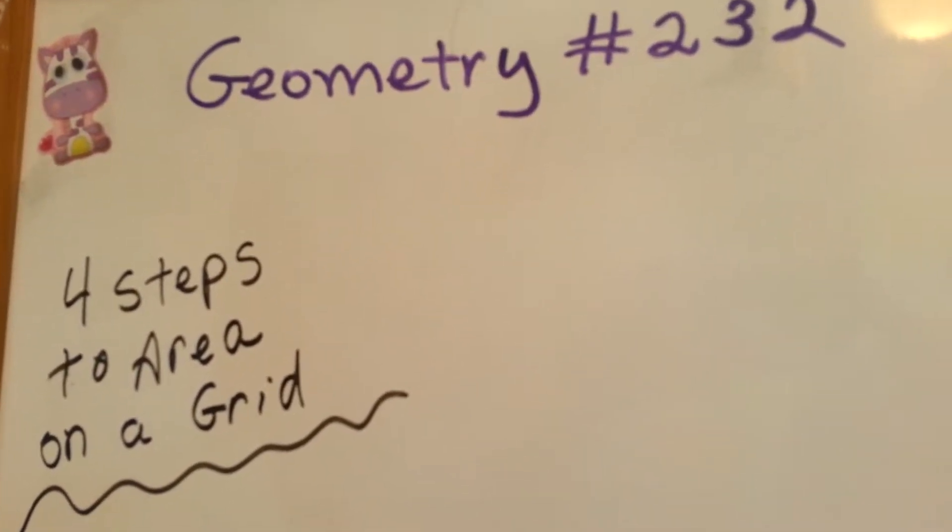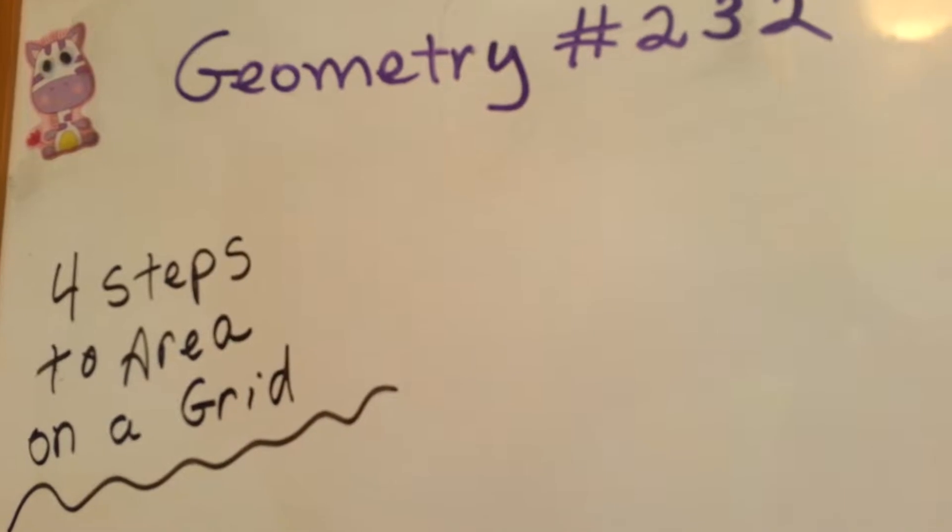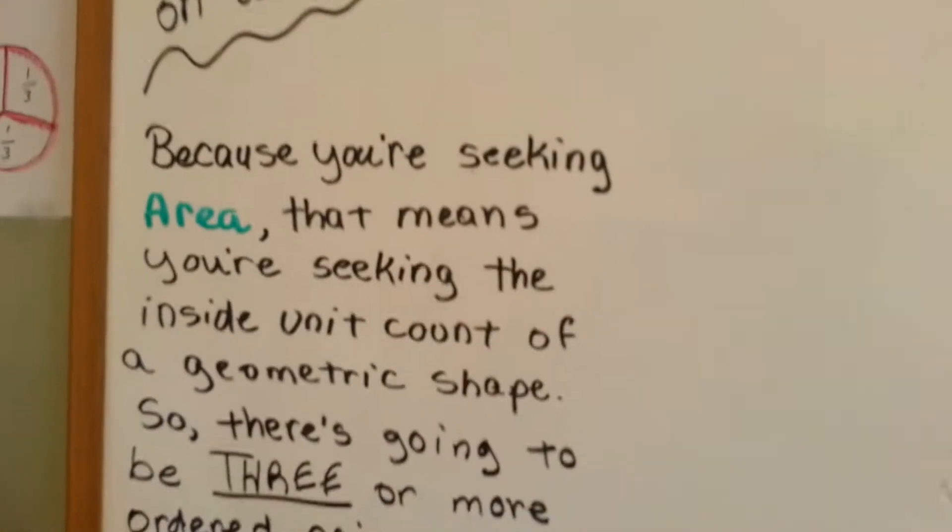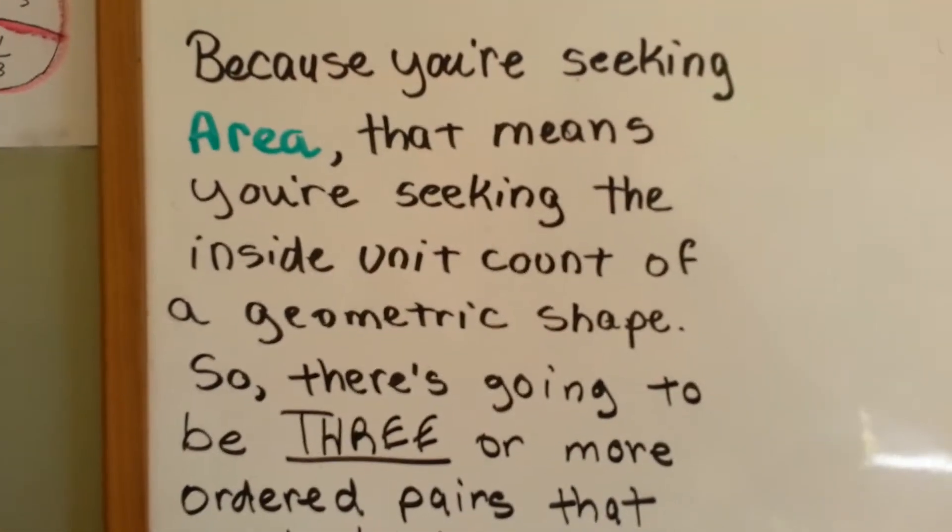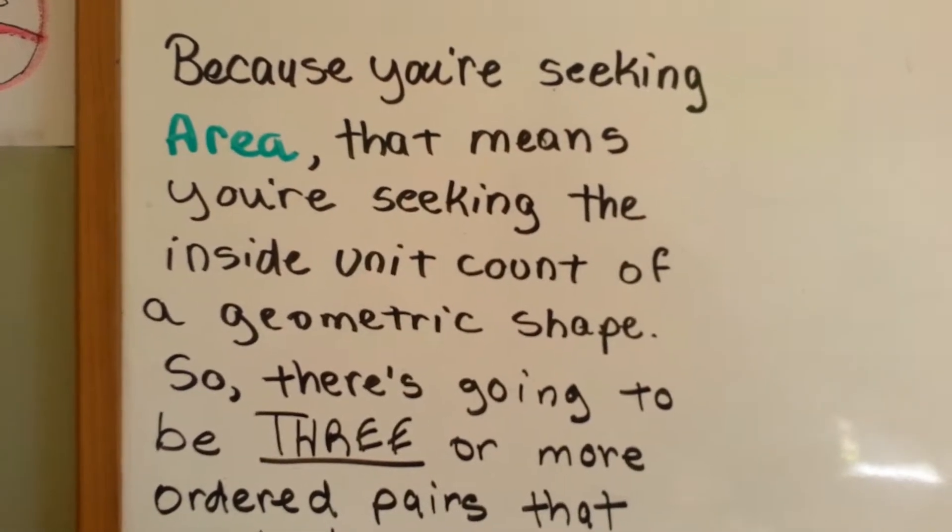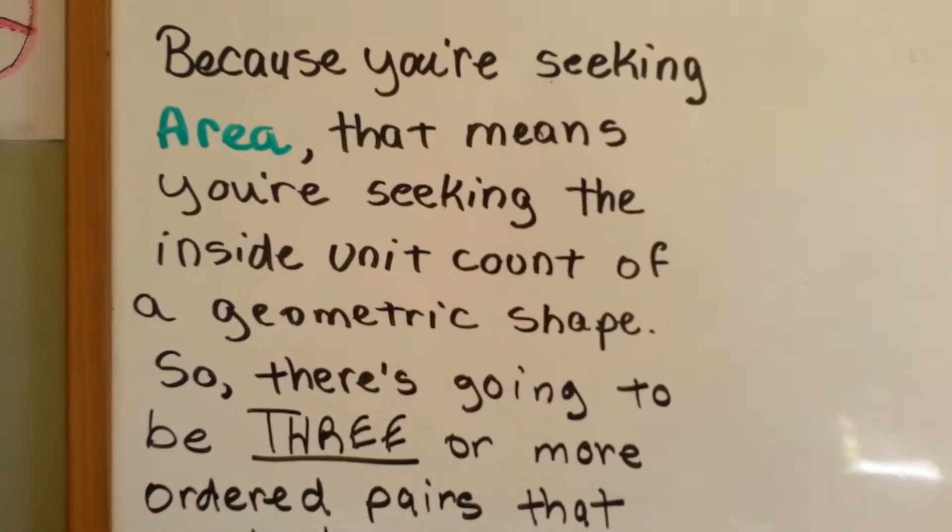Geometry 232, four steps to the area on a grid. Because you're seeking area, that means you're seeking the inside unit count of a geometric shape.